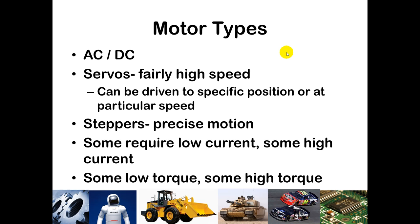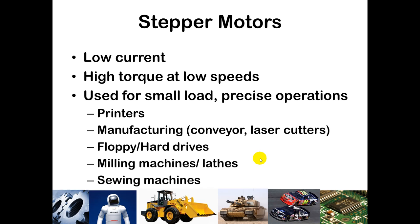Some motors require very little current and some require very high current — it depends on how much torque you need and how fast things need to go. Stepper motors are nice because they use very little current and can have very high torque at low speeds. They're generally not great for high-speed applications, but they are very precise. So if you're thinking about turning a turret on a tank, you need a very different motor than what you'd need to move an ink tank across a page for printing.